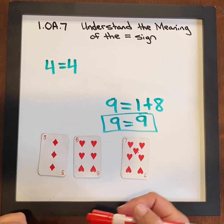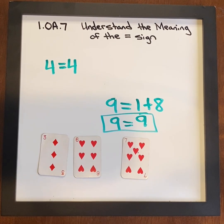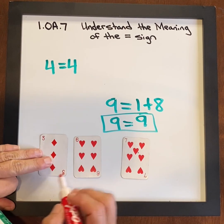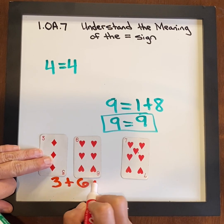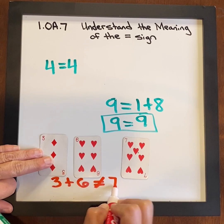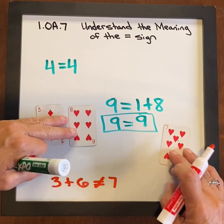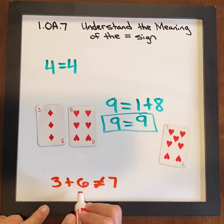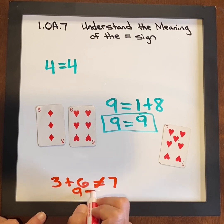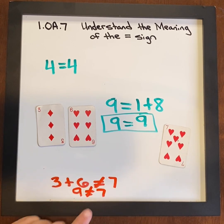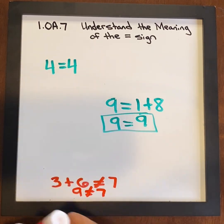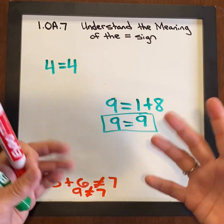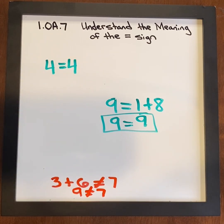This is a great opportunity to talk about equations that do not work. 3 plus 6 does not equal 7. We can ask students to prove that, because 3 plus 6 is 9, and 9 does not equal 7. Here we get to practice inequality, setting students up for success with algebra in a way that makes sense to them. Enjoy.